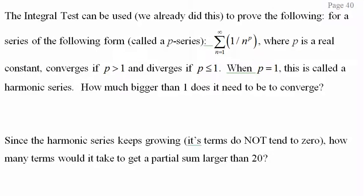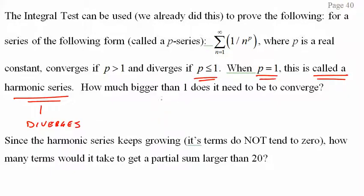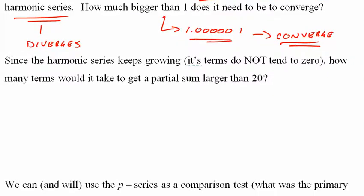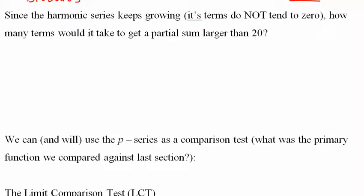We just proved the p-series rules: when p equals 1 we have the harmonic series and it diverges. If p is greater than 1, it converges — n to the 3/2 is an example. If p is less than 1, it diverges. How much bigger than 1 does p need to be? Just the tiniest bit will converge. The series keeps growing forever — it just gets there very slowly.